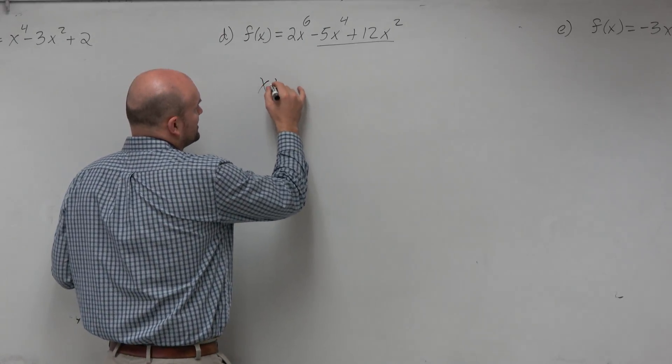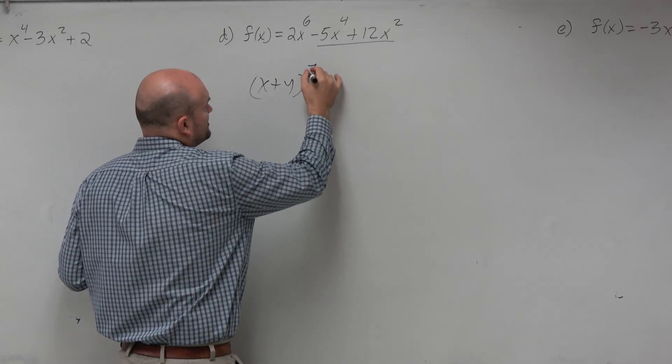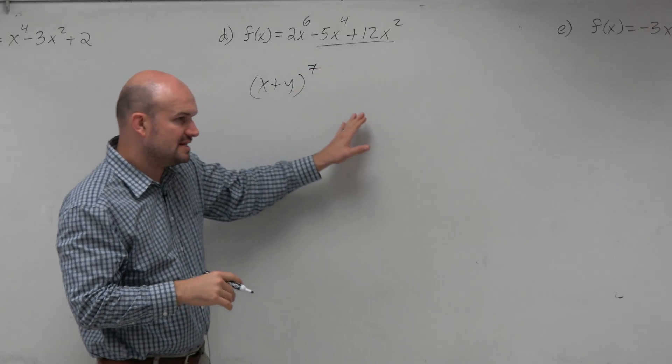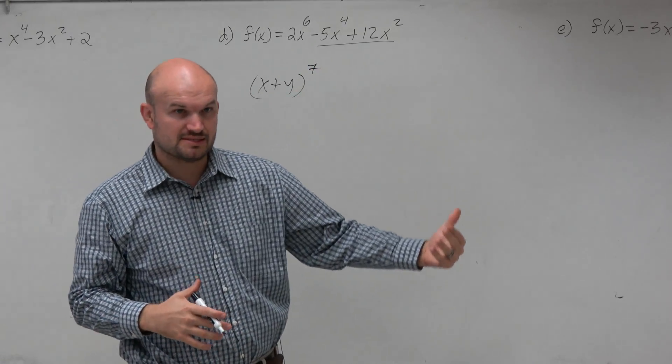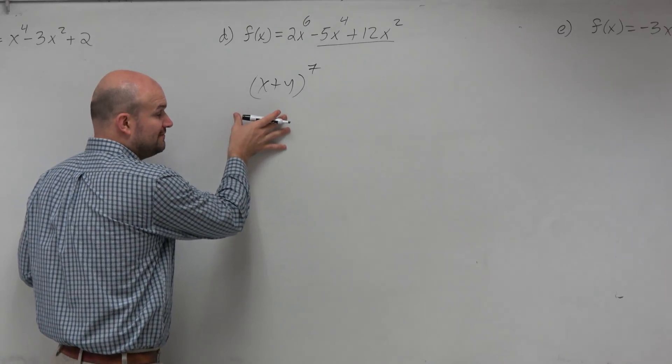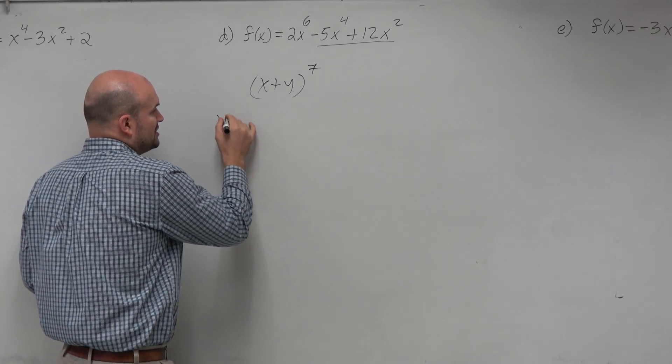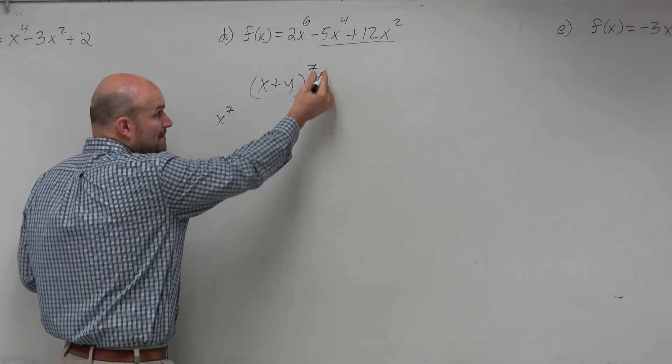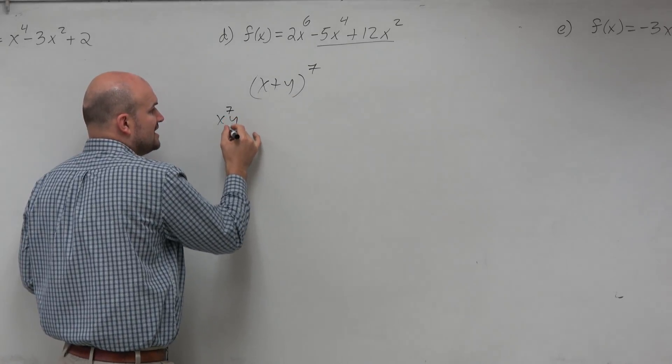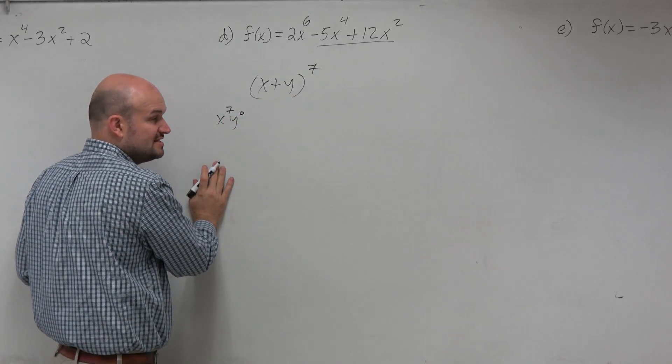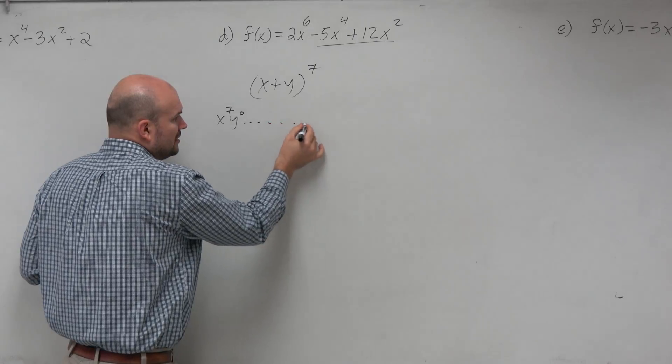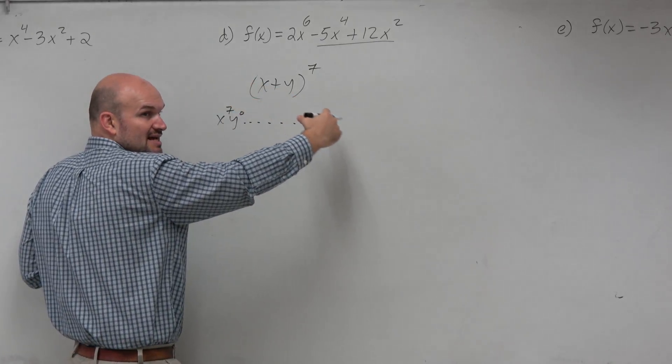So just remember, we have x plus y, let's say, to the seventh. A couple of things that I wanted you guys to take away from this lesson was that if you were to expand this, the first term is always raised to that power of the binomial expansion. The second term starts at 0, and then the first term descends as the powers.